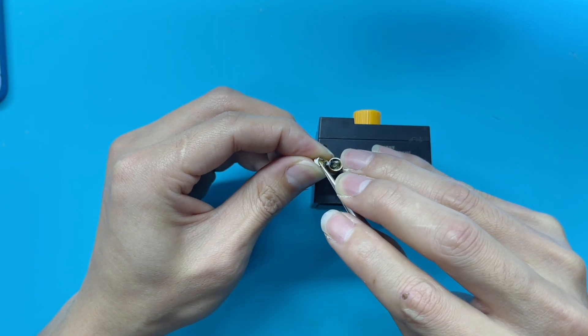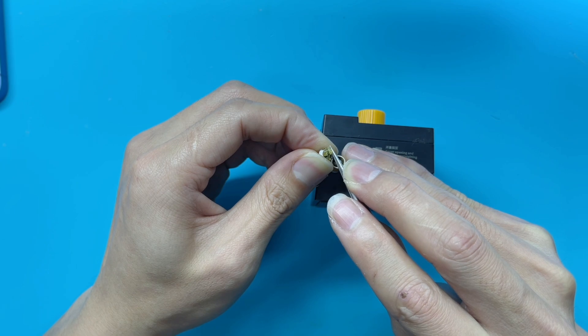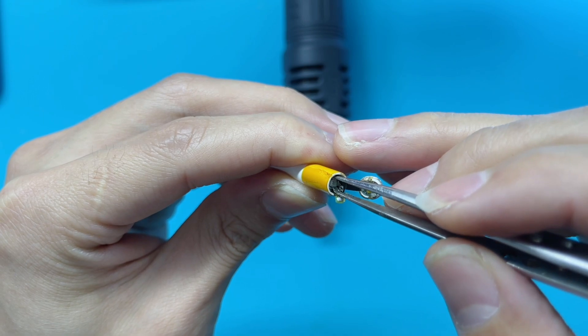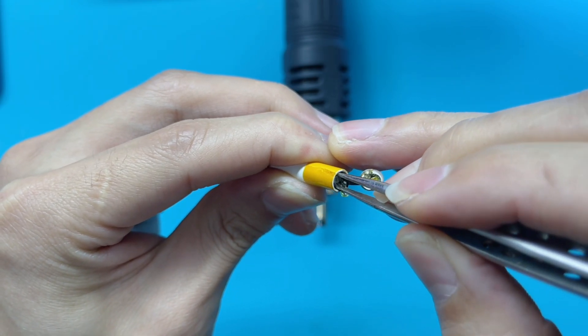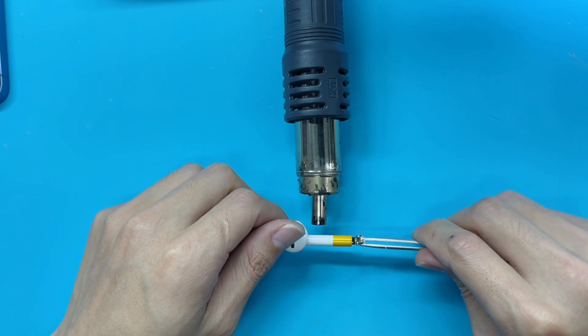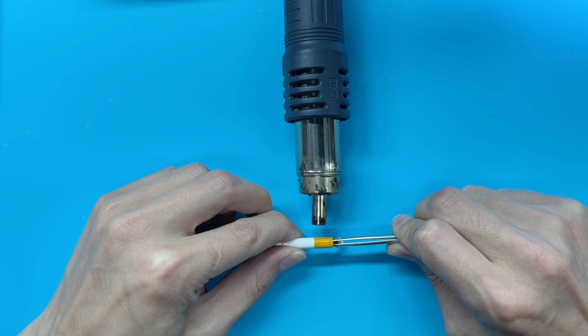Continue to clean up the glue at the bottom. Use a curved tweezer to hold the battery and try to pull out the battery while heating. Please remember to not forcibly take it out, cause it will cause permanent damage. Just keep heating if it's stuck.